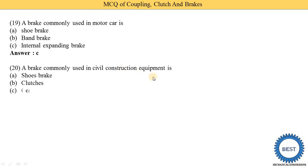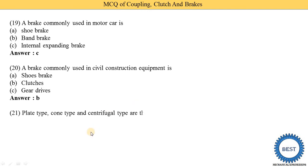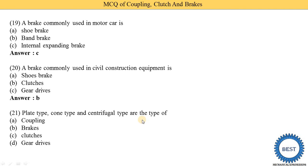A brake commonly used in civil construction equipment — options: shoe brake, clutch, gear drives. Option B is correct — the clutch is used as a brake in civil construction equipment. Additionally, plate type, cone type, and centrifugal type are types of which device? Options: coupling, brake, clutch, gear drives. Correct answer is option C — clutch. We know the clutch has various types: plate type, cone type, and centrifugal type clutch.